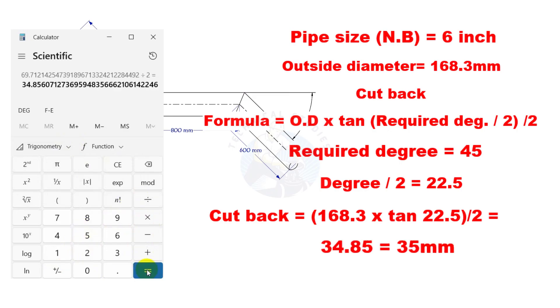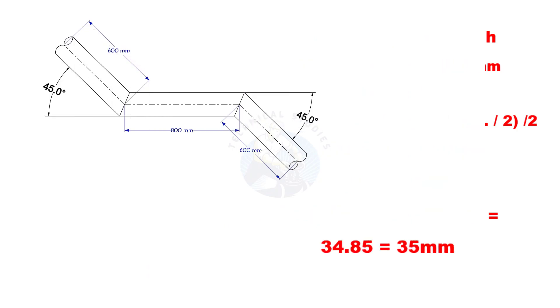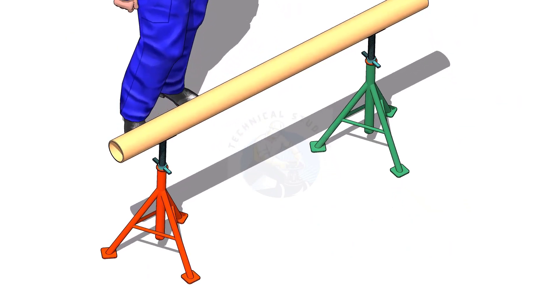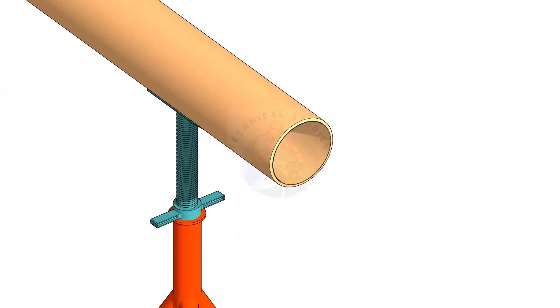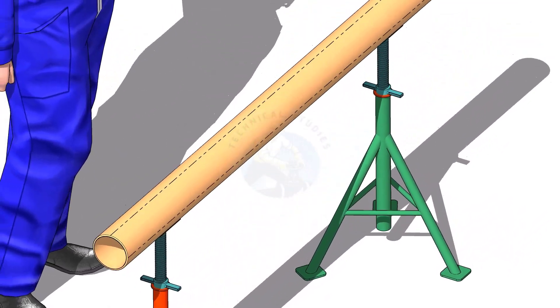The cutback is nearly 35 millimeters. Put the pipe on stands and mark four center lines.